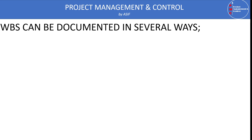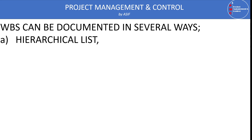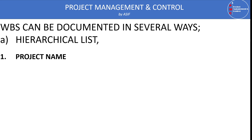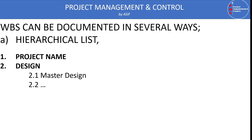The WBS can be documented in several ways. Number one is the hierarchical list. In a hierarchical list, we make our listing — for example, item one is the project name, which is our level zero or one. Then we have the next deliverable or mega deliverable, like the design stage, which can be further decomposed into master design stage, concept design stage, schematic design stage, detail design stage, and IFC drawings. The next mega deliverable may be procurement.